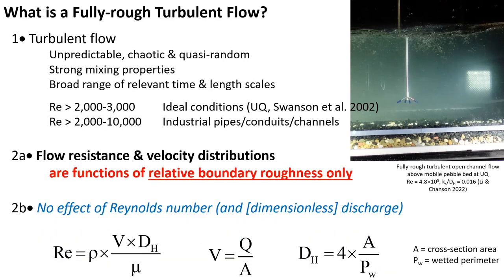This is typically observed when the Reynolds number is greater than 2,000 to 10,000. Fully rough turbulent flow corresponds to flow for which the flow resistance and velocity distributions are functions of the relative boundary roughness only, with no effect of the Reynolds number.